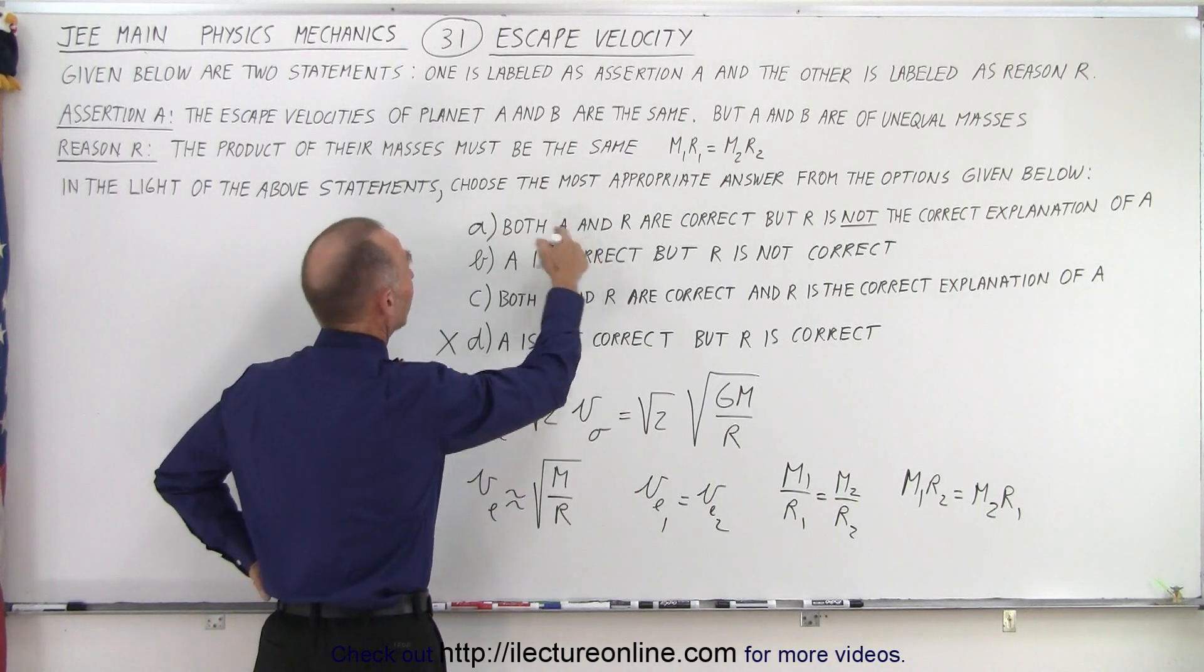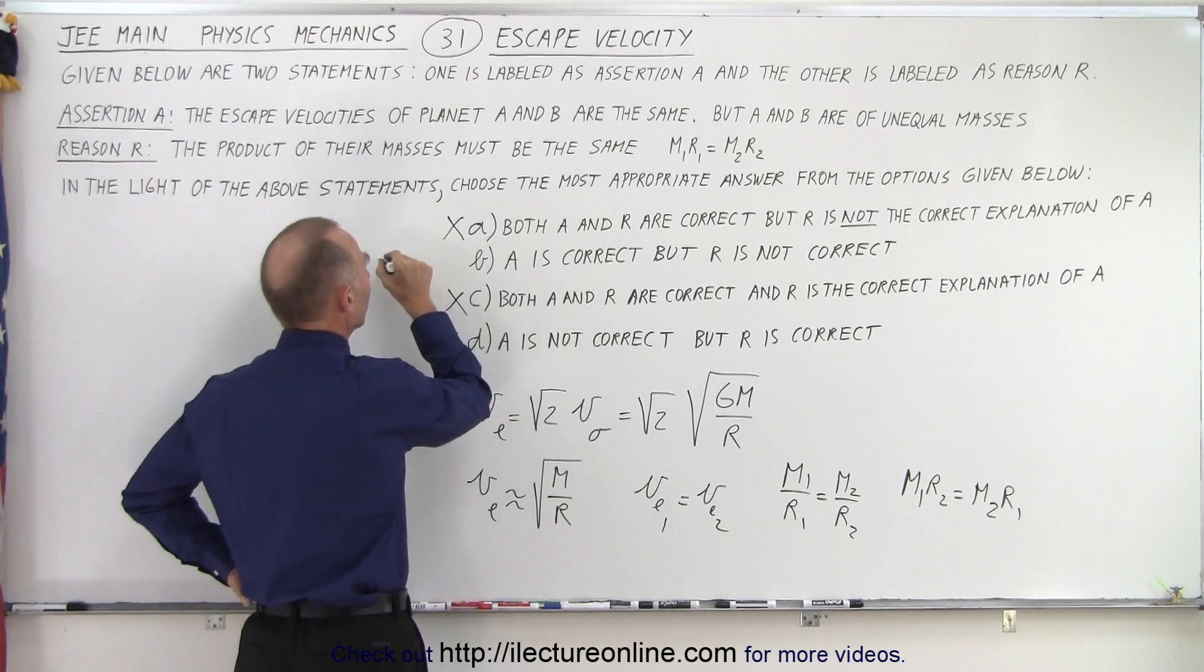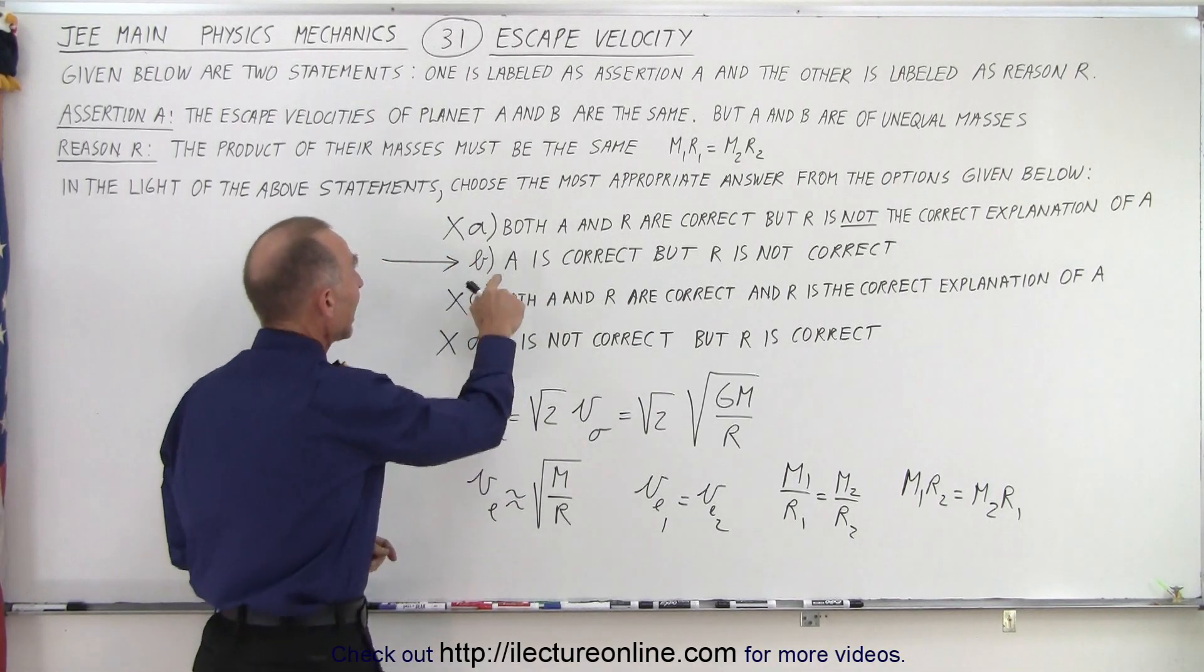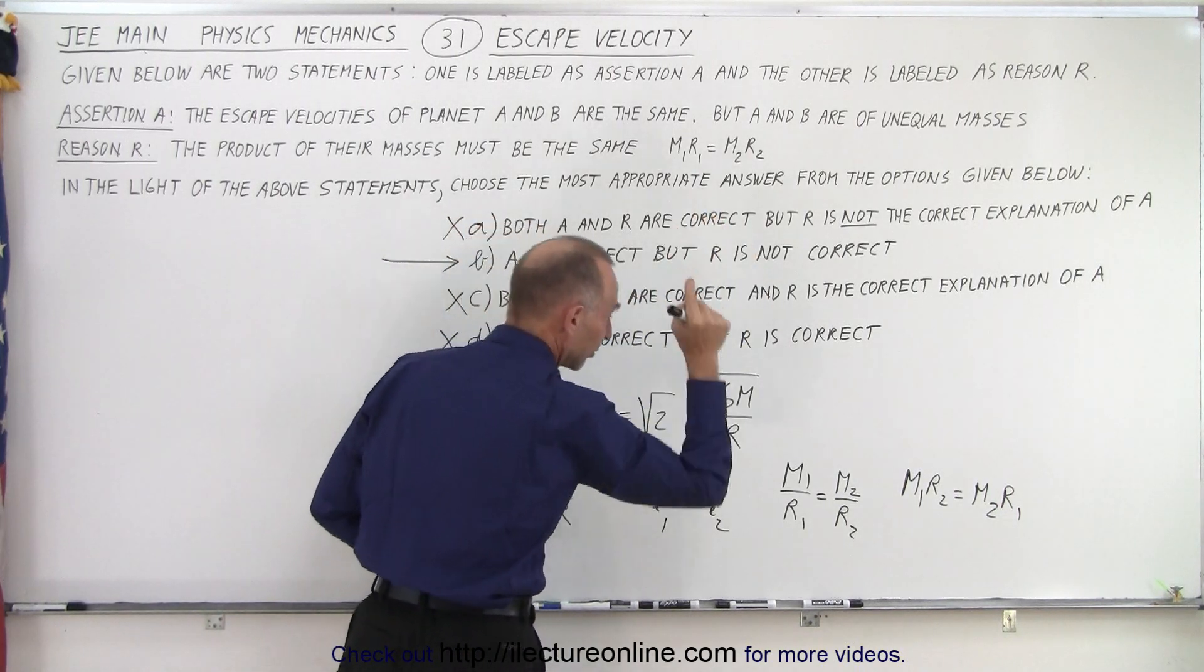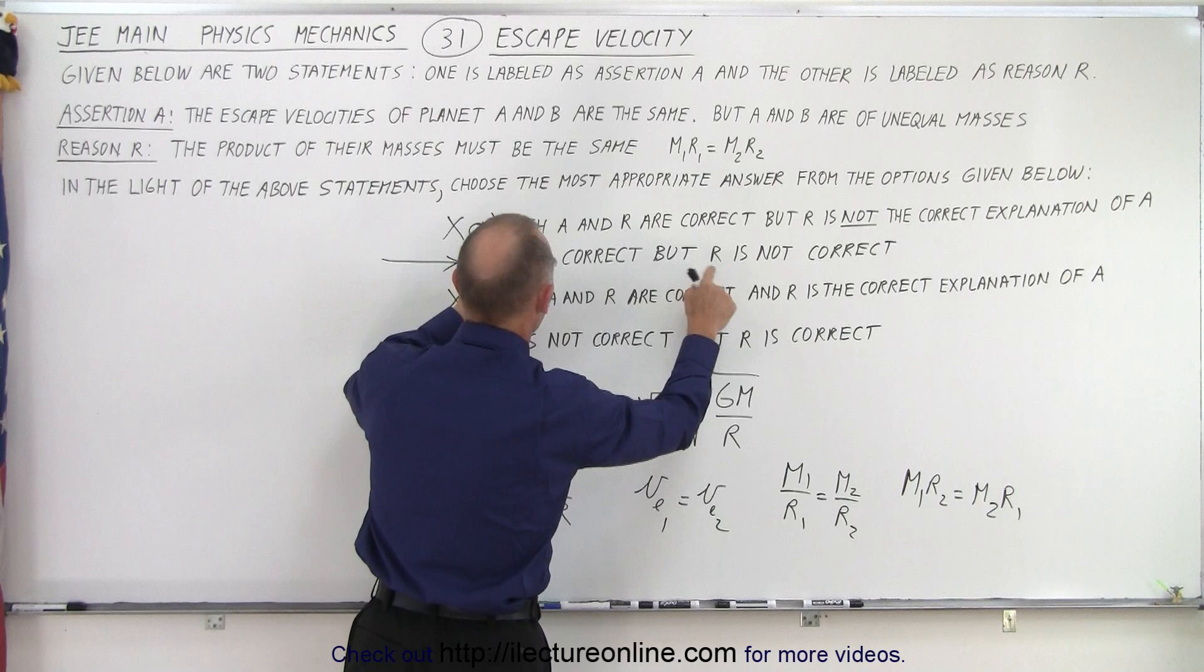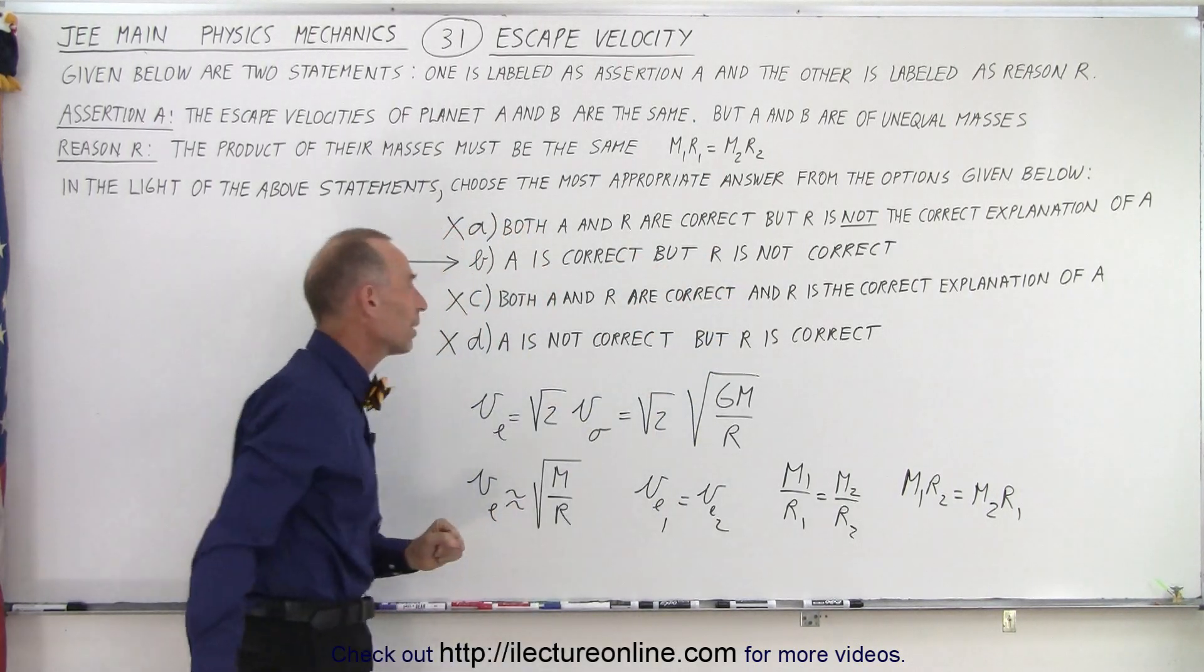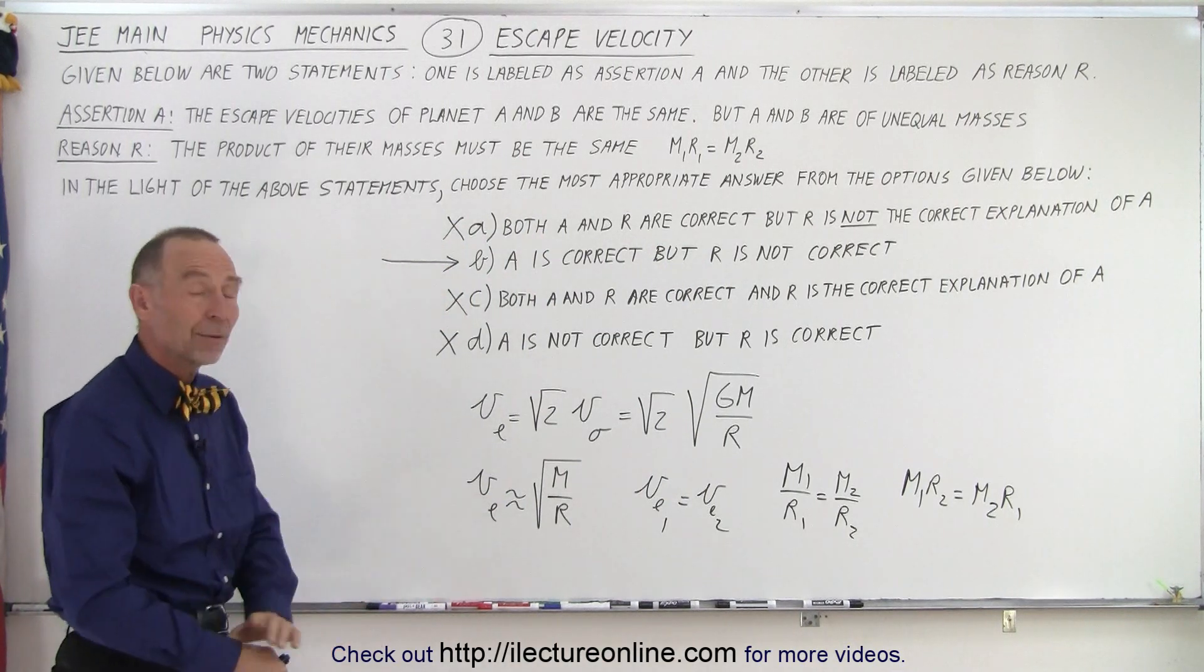So, both A and R are correct. Well, that's not true because R is not correct. A and R are correct. That's not true. We're only left with one possible answer. And let's see if that matches. A is correct, but R is not correct. We see that it's not correct. So, we're okay on both assertion and reason. We know now that B is the correct answer. And that is how it's done.